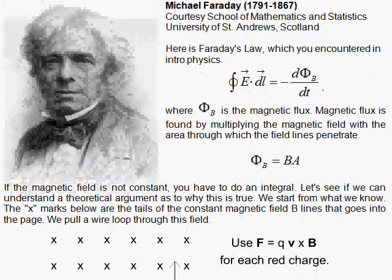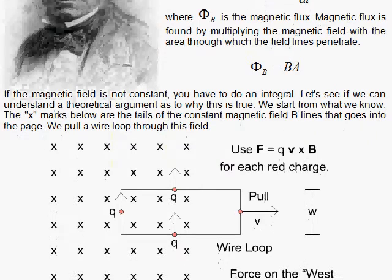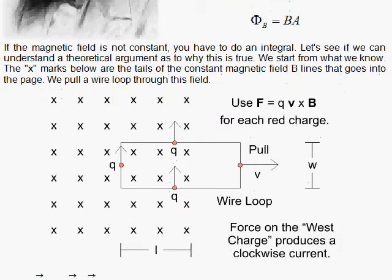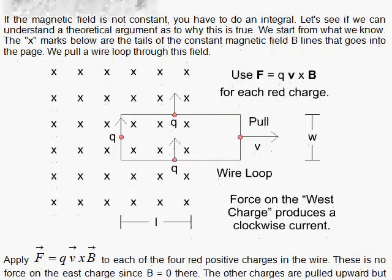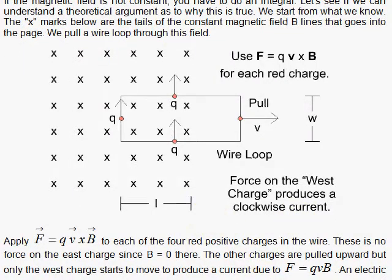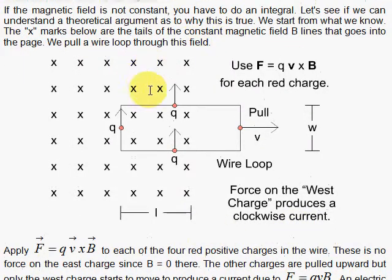We're going to see how we might derive that law in part. Well, we start out here with the magnetic field into the page. And this magnetic field into the page will be used in conjunction with a wire, a rectangular wire that I pull to the right.